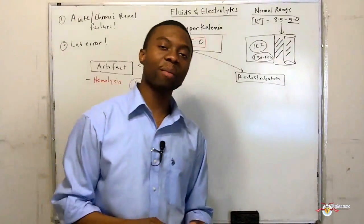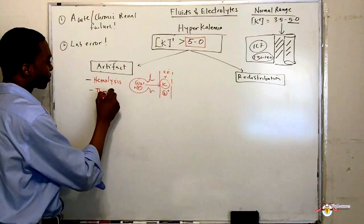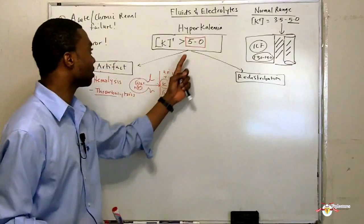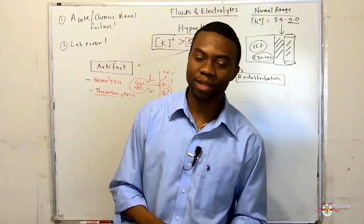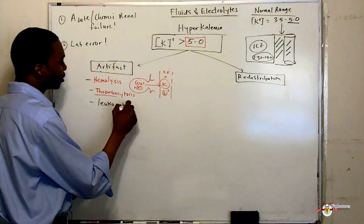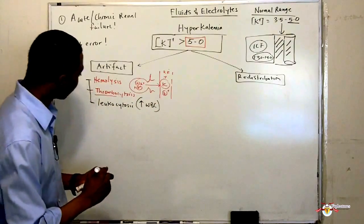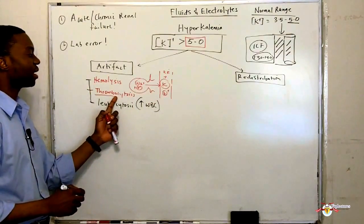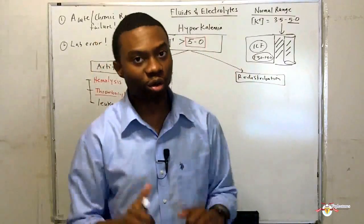Another way we can develop it is thrombocytosis. If you have a lot of platelets running around — platelet count over 500,000 to 600,000 — that can cause hyperkalemia. Or you can have leukocytosis, a very high white count. All you need to know is: if red blood cells are lysing, or you have a lot of platelets and white blood cells floating around, that gives a spurious picture of hyperkalemia.